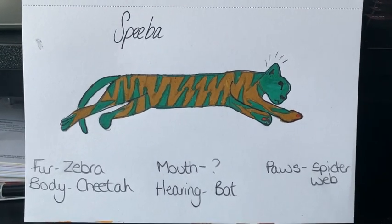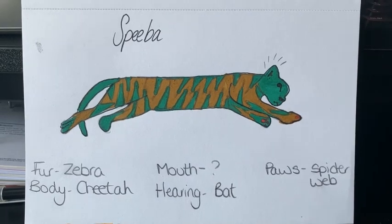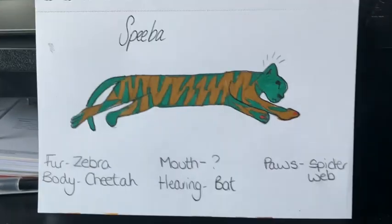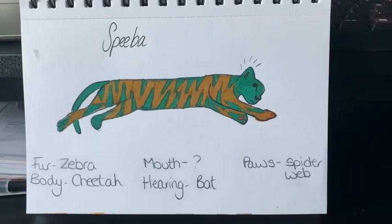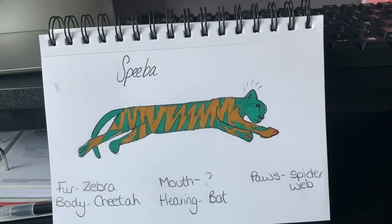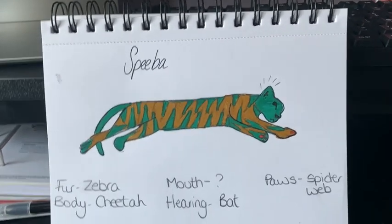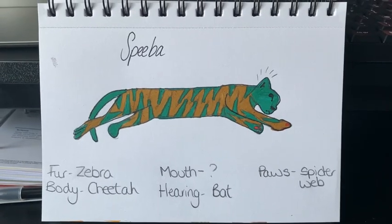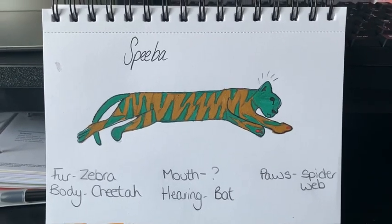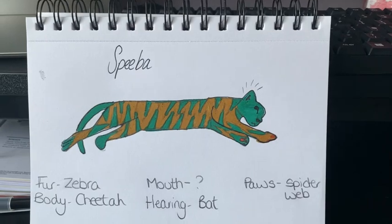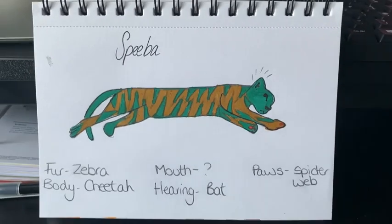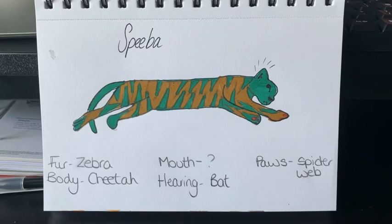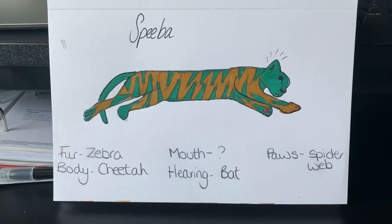For the hearing, I wanted my ultimate predator to have the best hearing possible. The animal with probably the best hearing is a bat — they can be a little creepy, but their hearing is phenomenal, so I thought that would be great for my ultimate predator.